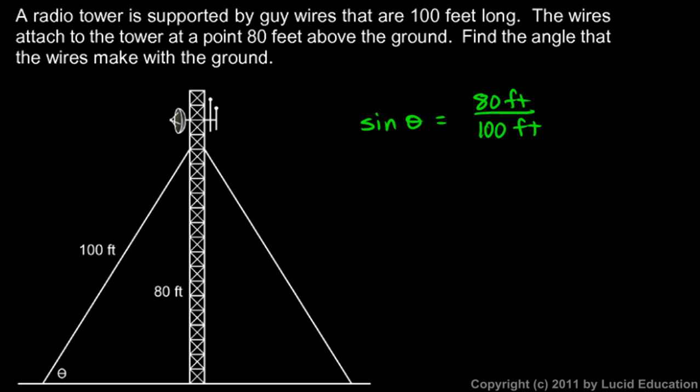And the feet cancel out. So sine theta is just 80 over 100. So theta has to be the inverse sine of 80 over 100. And on the calculator, that comes out to 53 degrees.